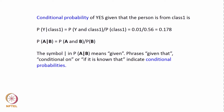The notation P(A|B) is read as 'probability of A given B.' The vertical line symbol in A|B means 'given' — phrases like 'given that,' 'conditional on,' and 'if known that' all indicate conditional probabilities.